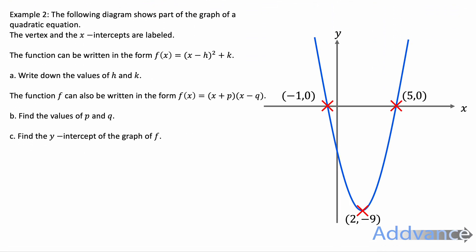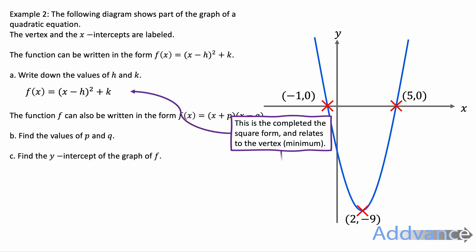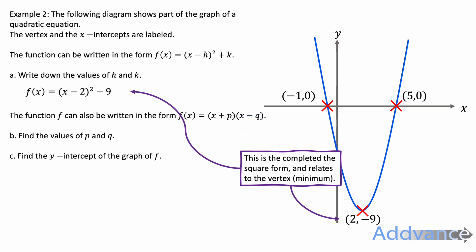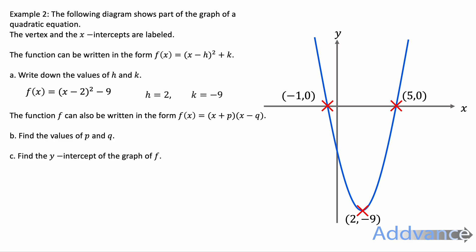In example two, the diagram shows part of the graph of a quadratic equation. The vertex and x-intercepts are labelled. The function can be written as f(x) = (x − h)² + k. Write down the values of h and k. This relates to the vertex — it's the completed-square form. The numbers give us (x − 2)² minus 9, so h equals 2 and k equals minus 9. That's a super simple answer, far simpler than it looks.